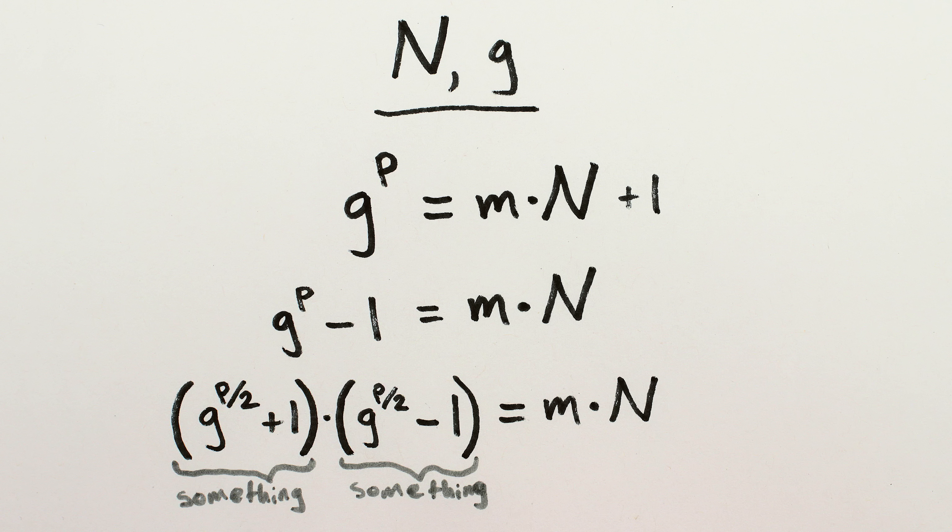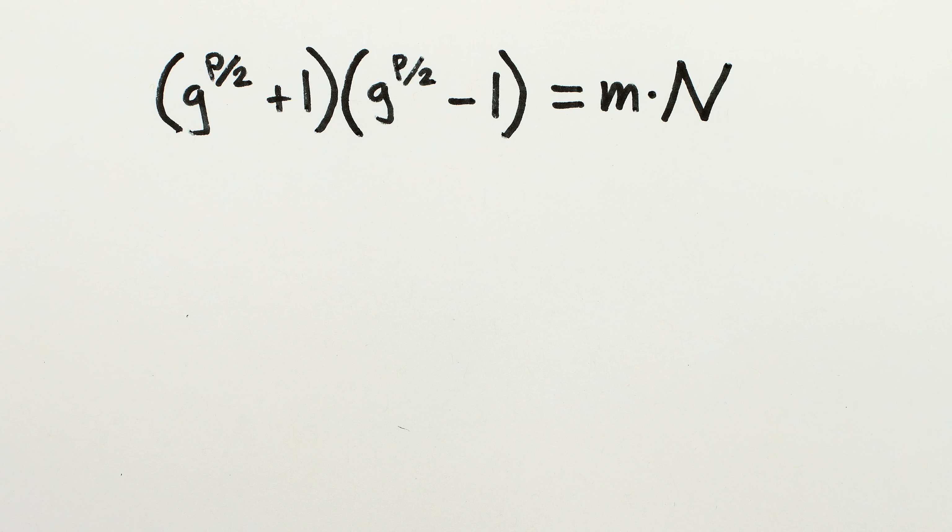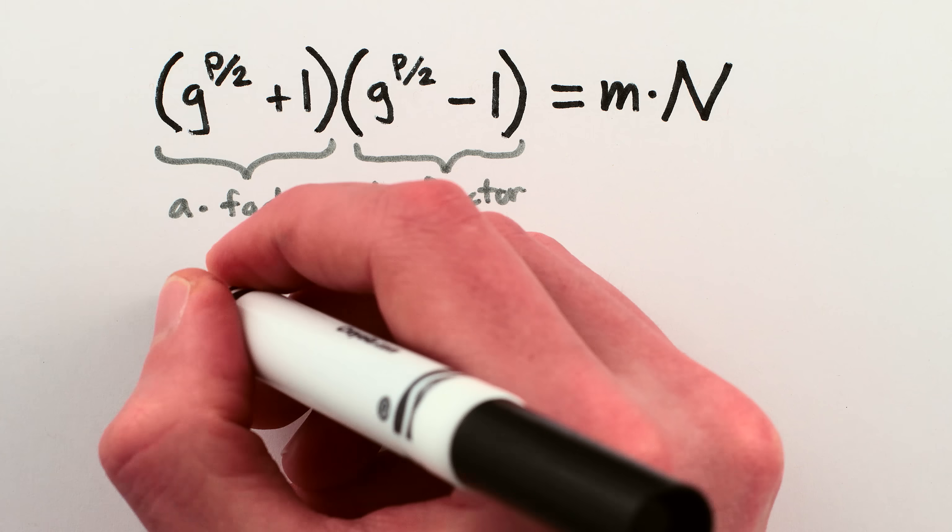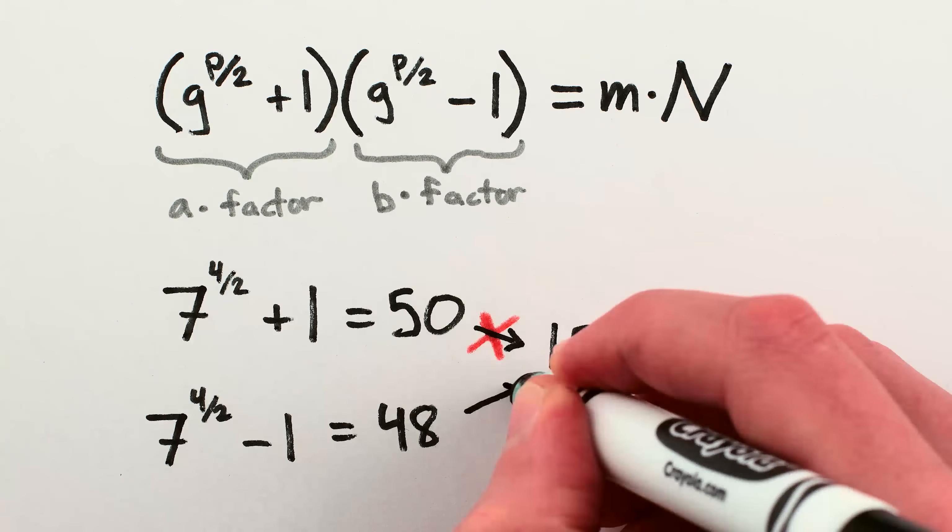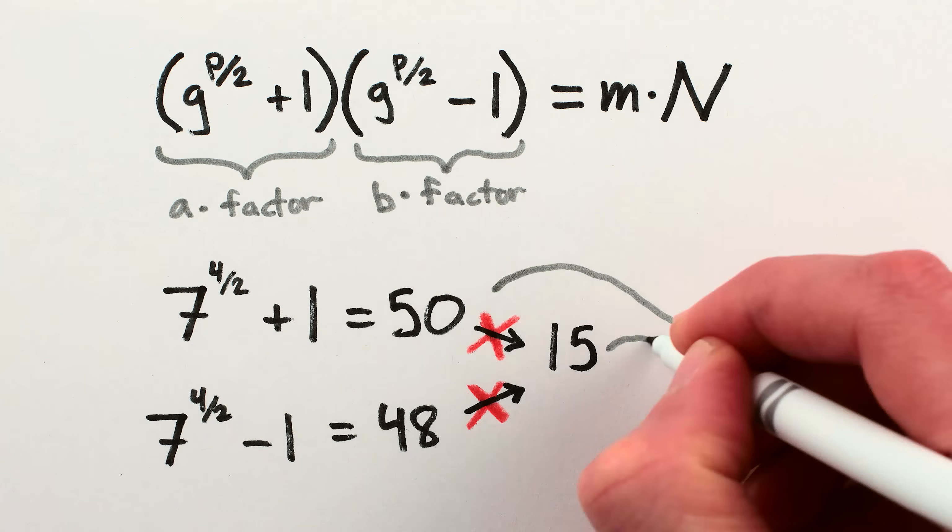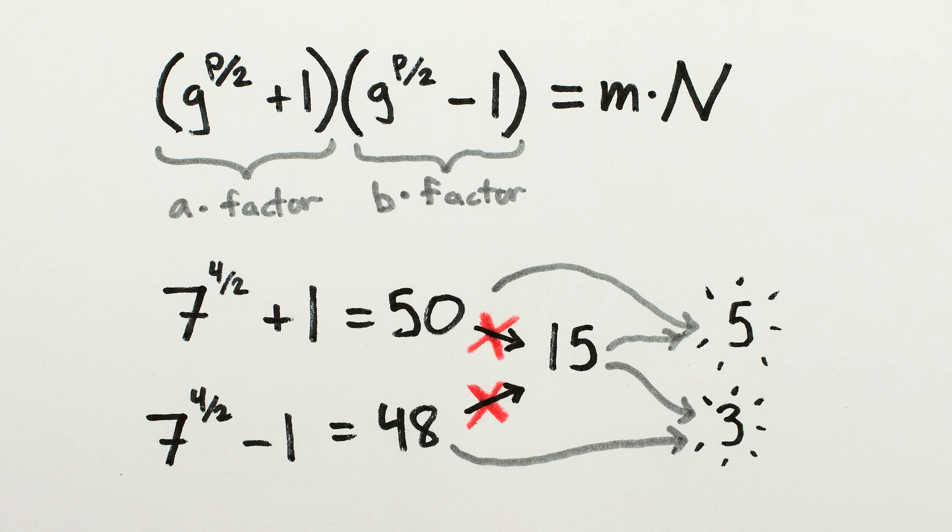These two terms are precisely the new and improved guesses that Shor's algorithm prescribes. Take the initial crappy guess, multiply it by itself p over 2 times, and either add or subtract 1. Of course, since we're dealing with a multiple of n rather than n itself, the terms on the left-hand side might be multiples of factors of n rather than the factors themselves, like how 7 to the 4 over 2 plus 1 is 50, and 7 to the 4 over 2 minus 1 is 48, neither of which is a factor of 15. But we can find shared factors by using Euclid's algorithm again, and once we do, we'll have broken the encryption.